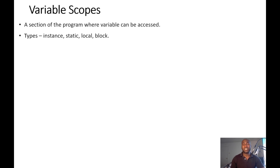We have the instance variables, which are also called the instance field. We have the static variable, which are also referred to as class variables. We have the local variables, which I can call method variables, and we'll have the block scope variables.